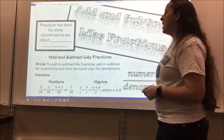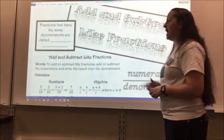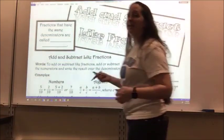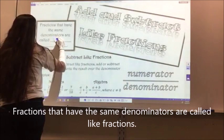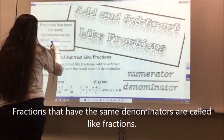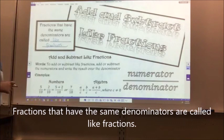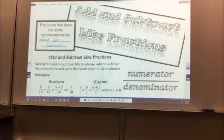So fractions that have the same denominators are called like blank. In those blanks, you're going to write like fractions. Fractions that have the same denominators are called like fractions.